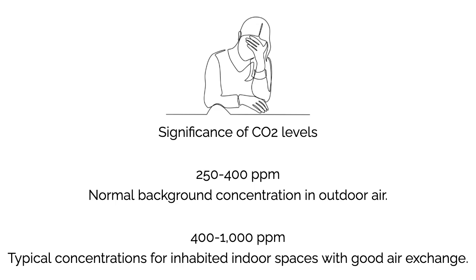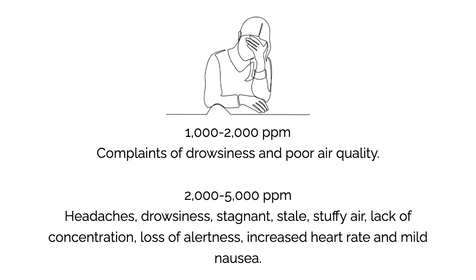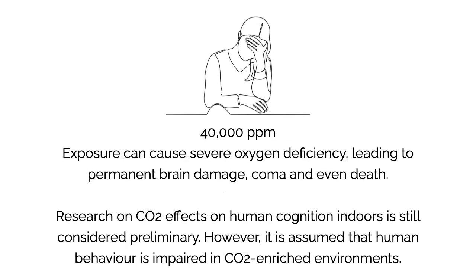Significance of CO2 levels: 250–400 ppm is the normal background concentration in outdoor air. 400–1,000 ppm represents typical concentrations for inhabited indoor spaces with good air exchange. 1,000–2,000 ppm brings complaints of drowsiness and poor air quality. 2,000–5,000 ppm causes headaches, drowsiness, stagnant and stuffy air, lack of concentration, loss of alertness, increased heart rate and mild nausea. Exposure at 40,000 ppm can cause severe oxygen deficiency, leading to permanent brain damage, coma and even death.